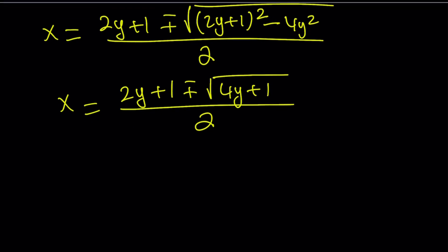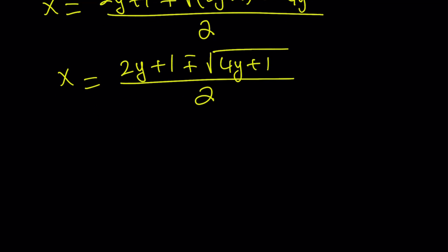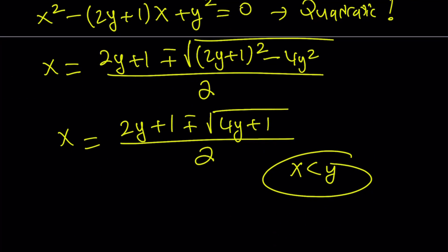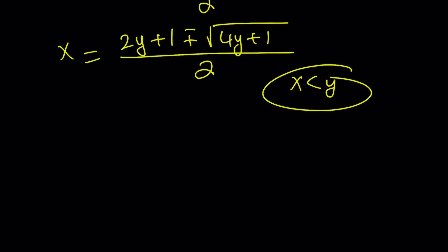The quadratic formula gave us two solutions. But which one do we use? This function is supposed to have a single unique inverse, and we have conditions to check. First, we know x < y, since y > x. So let's look at both solutions against that requirement.